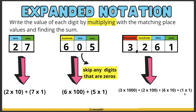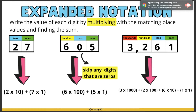The next example is expanded notation — we write the value of each digit by multiplying with the matching place values and finding the sum. It's basically expanded form but written in multiplication format. Instead of 20 we write 2 times 10 plus 7 times 1, which equals 27. Instead of 600 we write 6 times 100 plus 5 times 1, equaling 605. And instead of 3,000 we write 3 times 1,000 plus 2 times 100 plus 6 times 10 plus 1 times 1.